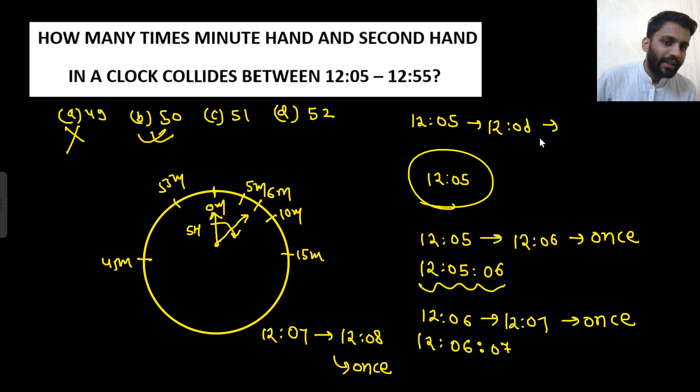From 12:05 to 12:08, 1, 2, 3 - three times. How can we calculate it? 8 minus 5 is 3. So between 12:05 to 12:55, how many times will it collide? 55 minus 5 is 50 times. That's it.